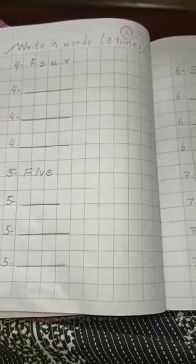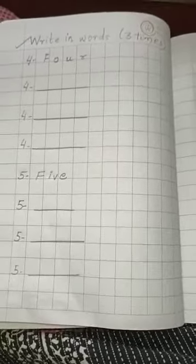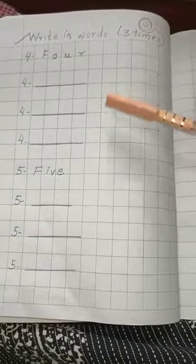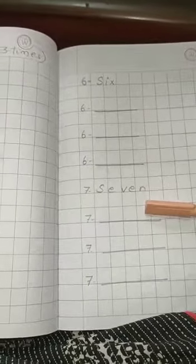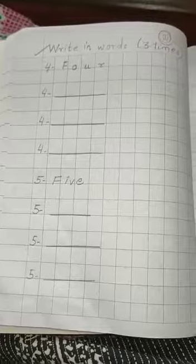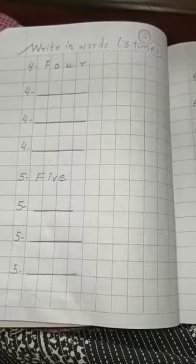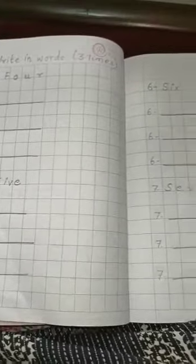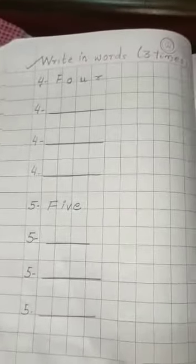You have to note the spelling on your maths copy. So your today's task is: write the spelling of 4, 5, 6, and 7 in your maths copy three times each. Okay, thank you.